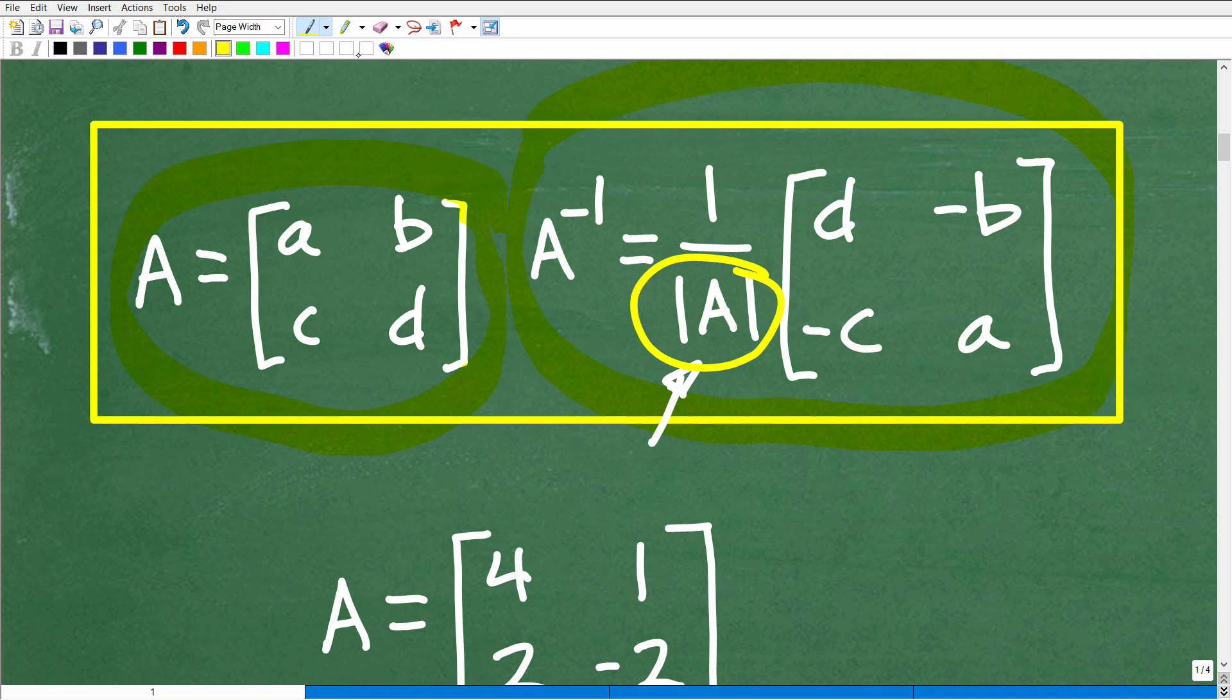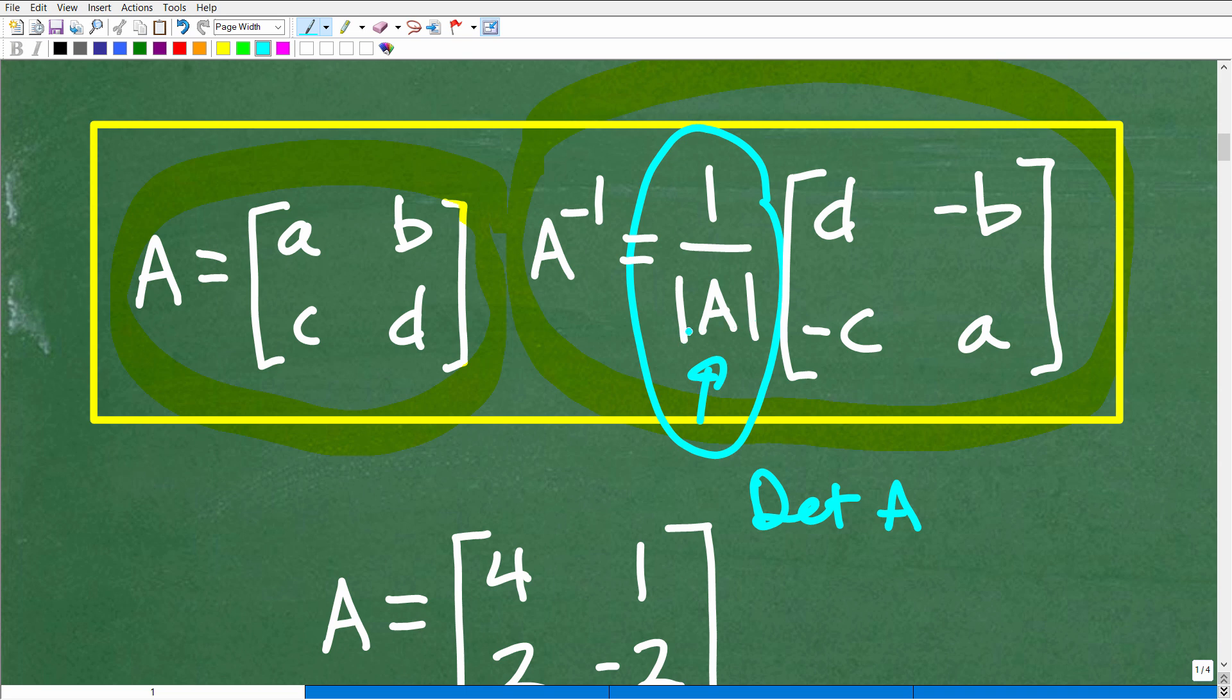Okay, so to find the inverse of matrix A, we have to just take this formula step by step. So, the first part of this formula is right here. We have 1 over this thing right here. So, what is this? This is the determinant of A. Okay, so this is what this means right here.